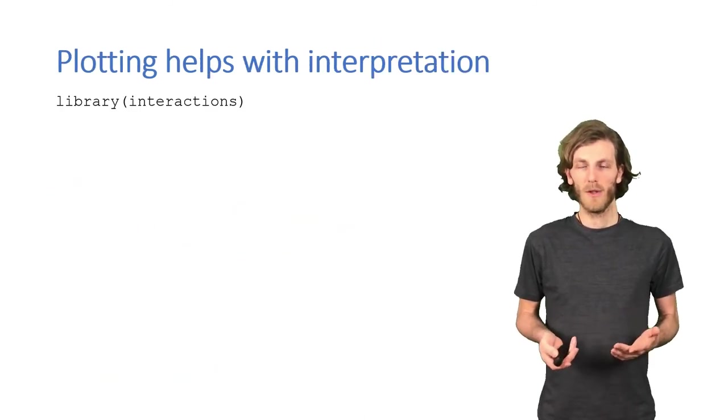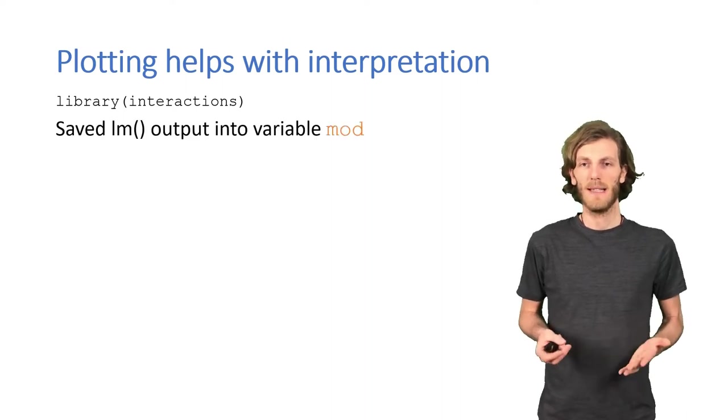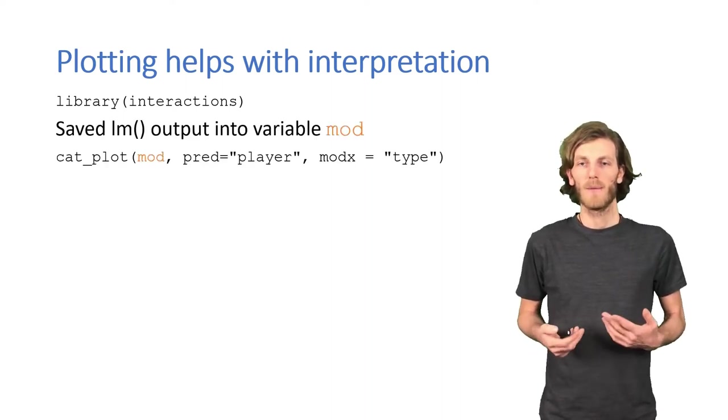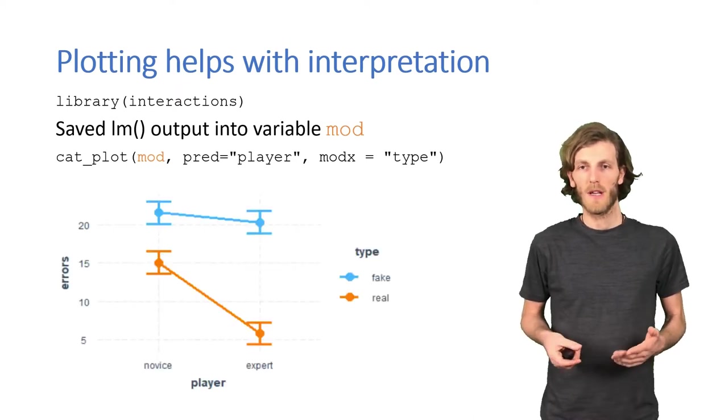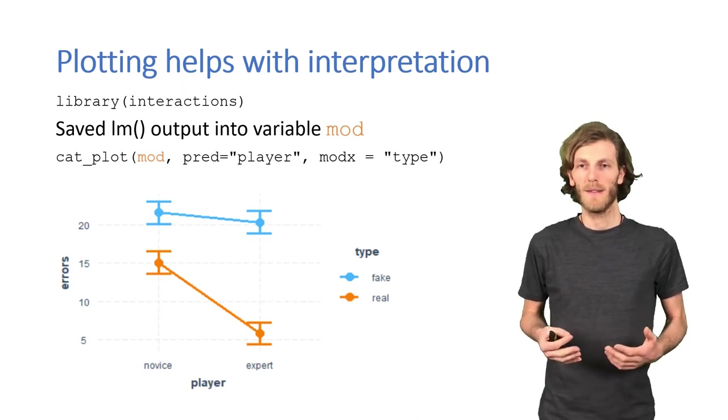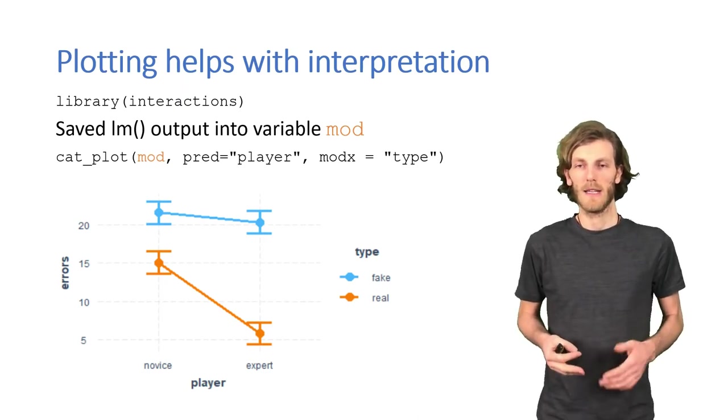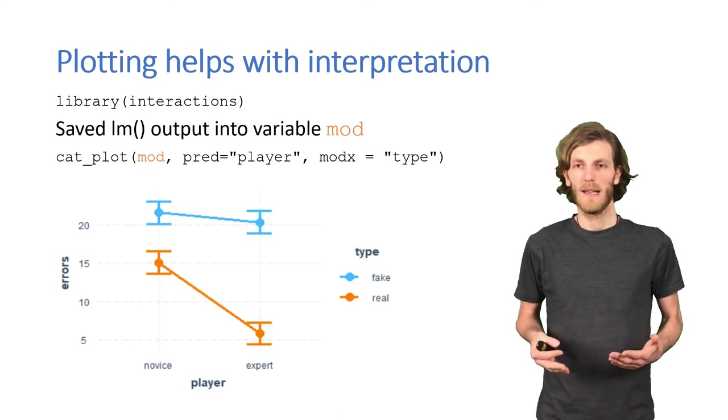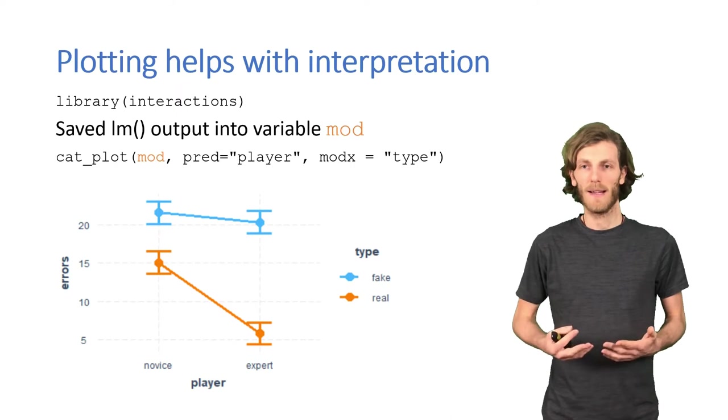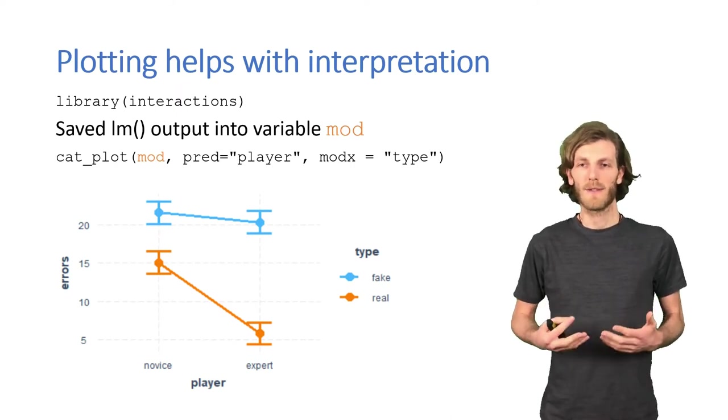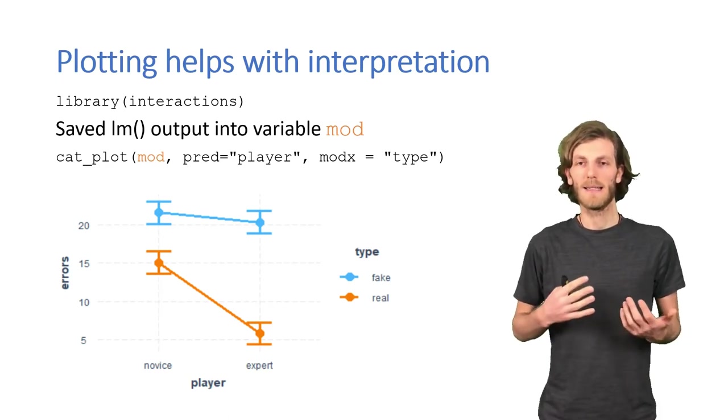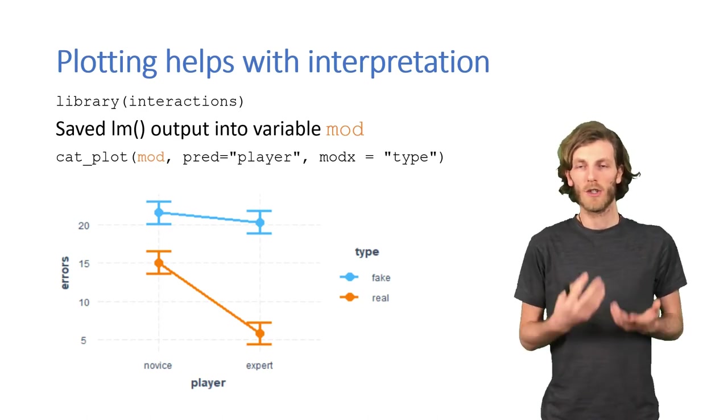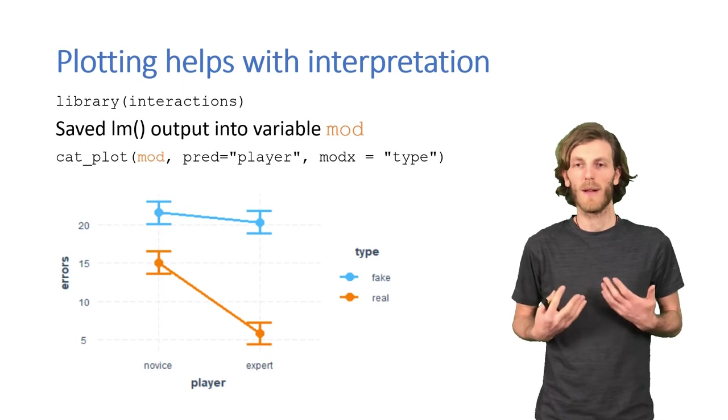So, if we now use the interactions package and save the lm model into a variable, we can run an interaction plot with the cat_plot for categorical plot function, and it looks like this. So, here we can now see one line for each type of position and two columns for the player types. And those two lines are not parallel, which indicates that something different is going on for the different types of positions, depending on whether the player is a novice or an expert.